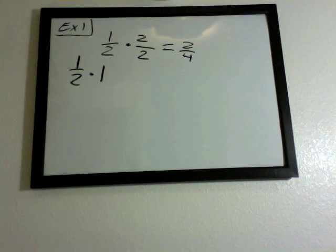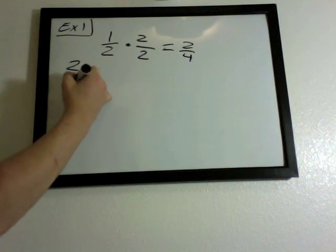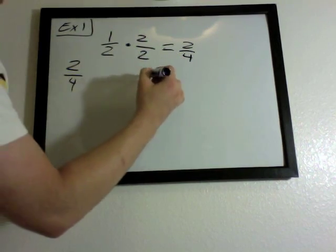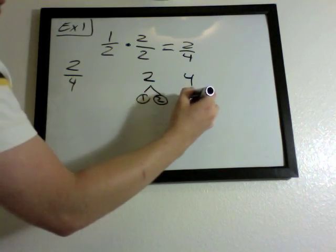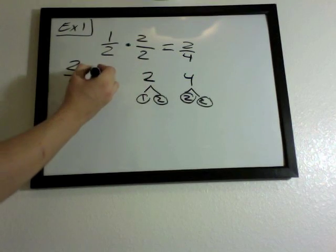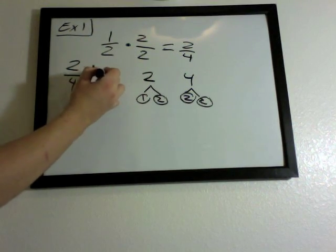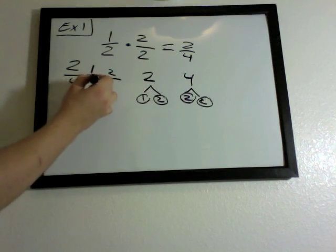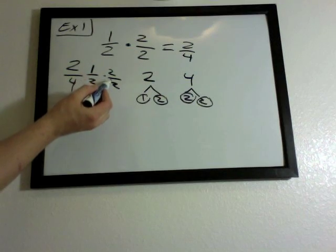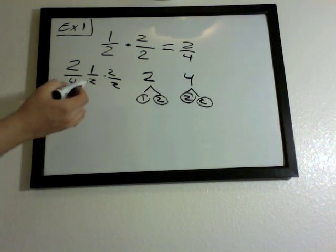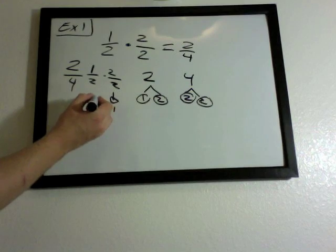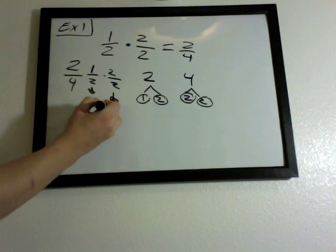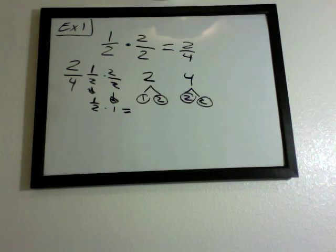Now we're going to do the same thing but in reverse. If we have two over four, let's break this up — two and four. Remember those factoring trees? Two factors as one times two; four factors as two times two. We put the top numbers on top: one times two over two times two. Two over two is one, so this just turns into one. We can drop it down: one half times one is one half.